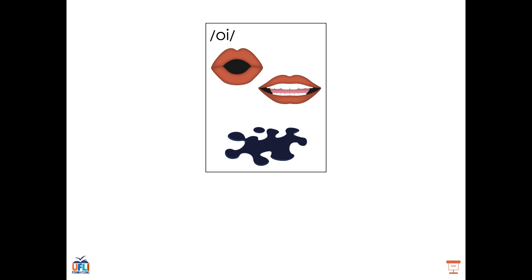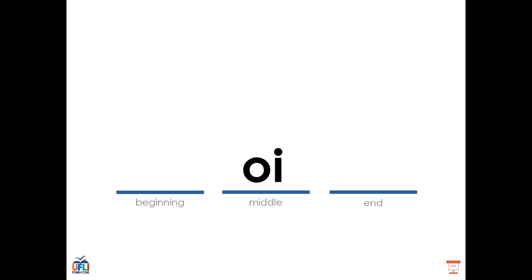So the OI sound is OI, OI as in oil. We can spell it using OI and we typically see it in the middle of a word. A good example of this word is point: P, OI, N, T, point. We can see the OI in the middle of the word.